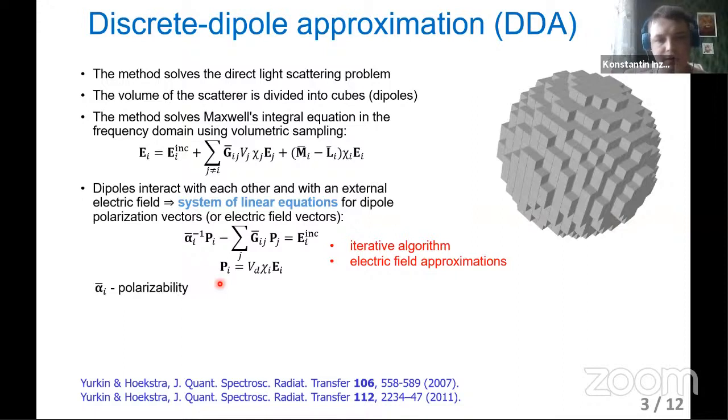Usually we solve this system using an iterative algorithm. But in this case, we have to know the electric field, internal electric field, as the first step of iterative solver. So we assume that if we have a more accurate electric field as the first step, we will have better convergence and can accelerate our calculations.